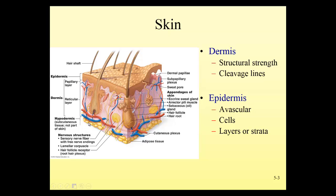Looking at these two layers, general statements we can make are that the epidermis is the non-living layer. It does not have any blood vessels — that's why it's given the term avascular, referring to no blood vessels. Any blood supply it receives must diffuse up from the dermis, where we see veins and arteries. So any oxygen or carbon dioxide that is leaving or entering cells must do so by diffusion from the dermis.